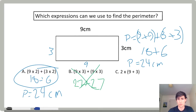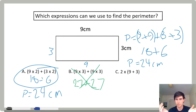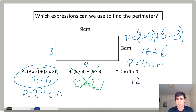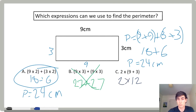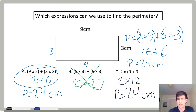Final strategy — this is a new one. Maybe this is one that you tried: two times (nine plus three). Parentheses say do this first, so nine plus three is 12. Two times 12 — P equals 24 centimeters. C works as well.